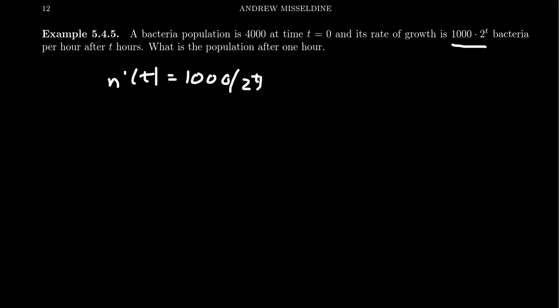So if we want to find what's the population after one hour, to answer that question we're trying to integrate from zero to one. There's 4000 at the initial quantity there.